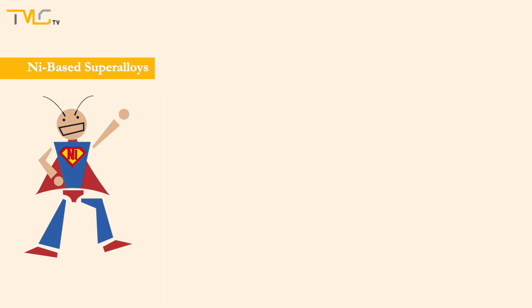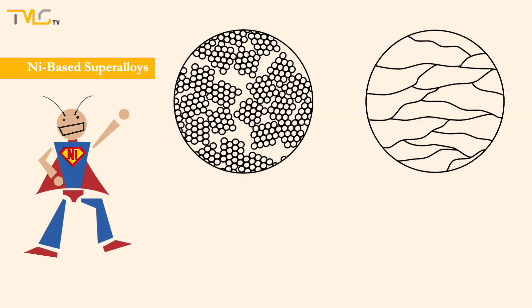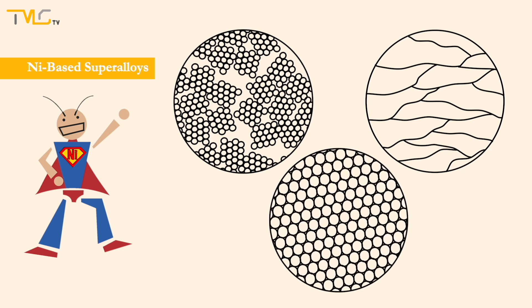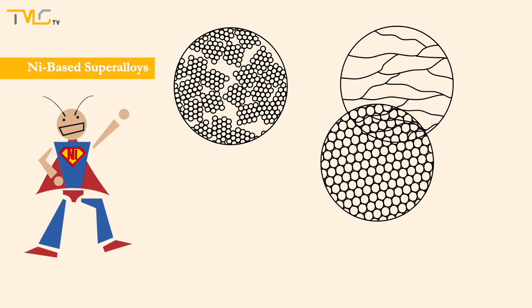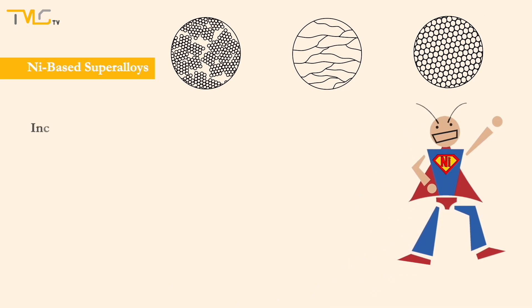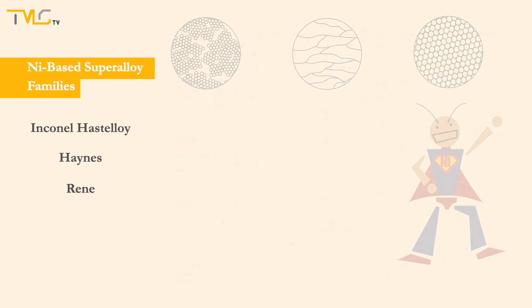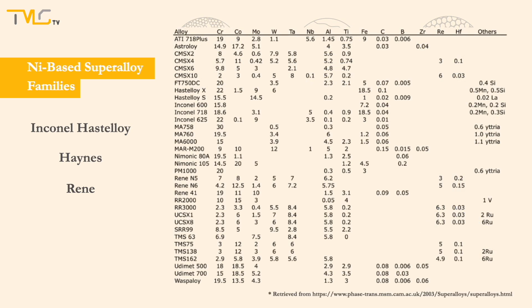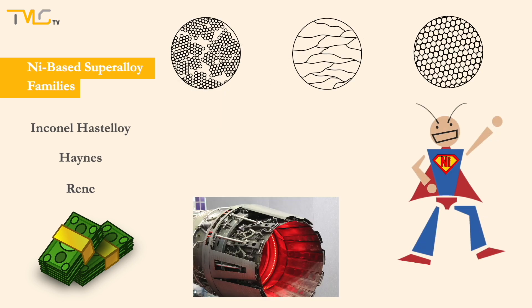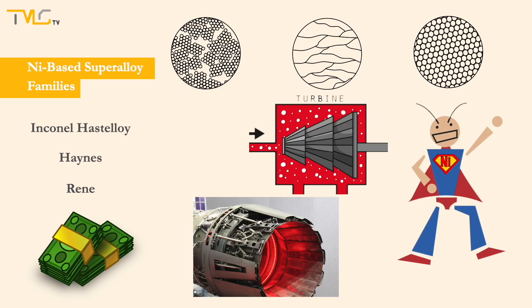They can exist in equiaxial, directionally solidified, or even single crystal forms. The Inconel-Hastalloy, Haines, and Rene families are common nickel-based superalloy families, having many specific compositions defined by the standards. Despite their costs, nickel-based superalloys are sometimes the only material family that can be employed for high temperature applications.